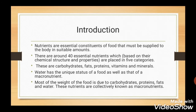Introduction. Nutrients are those substances present in food which must be supplied to the body in suitable amounts. There are around 40 essential nutrients, divided into 5 categories: carbohydrates, fats, proteins, vitamins and minerals. Apart from these, water also has a unique status as food. Most of the weight of food is due to carbohydrates, proteins, fats and water, and these nutrients are collectively known as macronutrients.